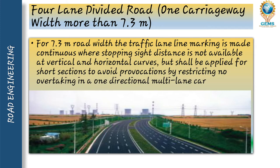In a one-directional multiple lane road, there should be no overtaking — the driver should drive in their own lane. They can overtake safely if many lanes are available. The four-lane divided road has a carriageway width of more than 7.3 meters.